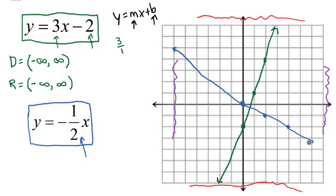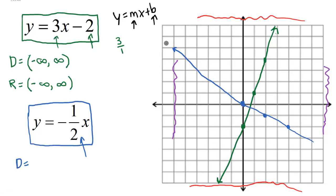If we run vertical lines through the blue line, they only pass through it once, so it is a function. For the domain and range, it's the same as the green line: following the line to the left goes to negative infinity, and to the right goes to positive infinity, so the domain is negative infinity to positive infinity. The y values also go from negative infinity to positive infinity, so the range is the same — all real numbers for both domain and range.